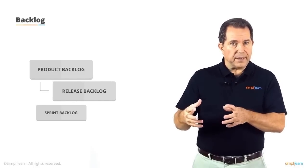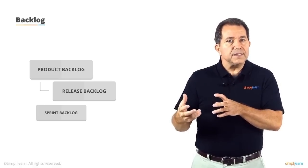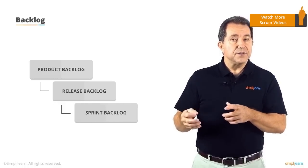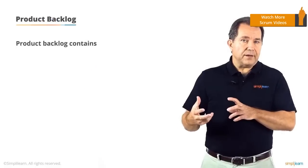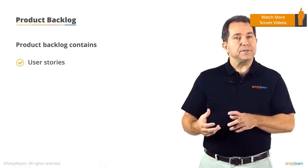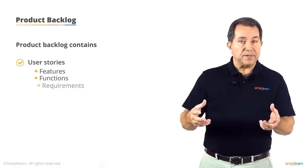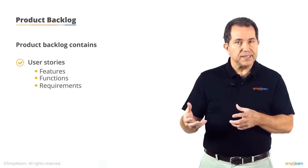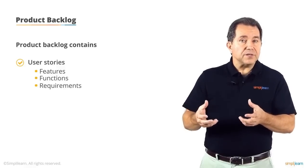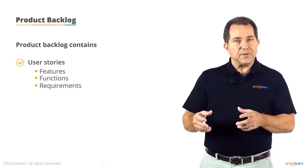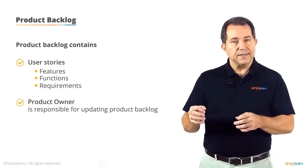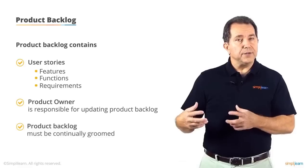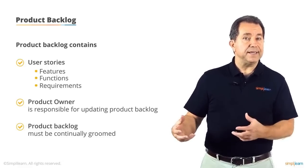The release backlog is a subset of the product backlog; releases support the product roadmap, and each release is populated with user stories necessary for that release. The sprint backlog is a subset of the release backlog and contains the user stories to be developed in the sprint. The product backlog contains user stories for the entire project and is the responsibility of the product owner. It includes functional user stories, technical or non-functional user stories, and risk- or defect-related user stories. The product owner keeps the backlog current through pruning — prioritizing and reprioritizing — and grooming, which is adding and removing user stories based on customer needs.